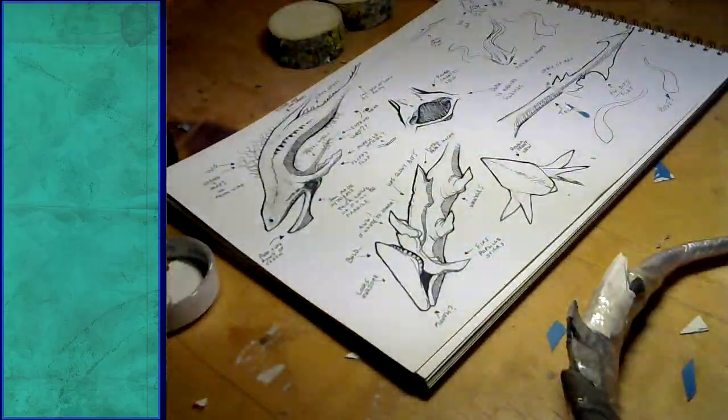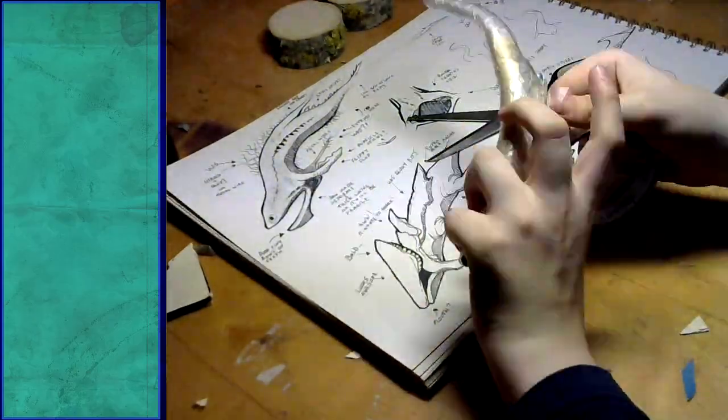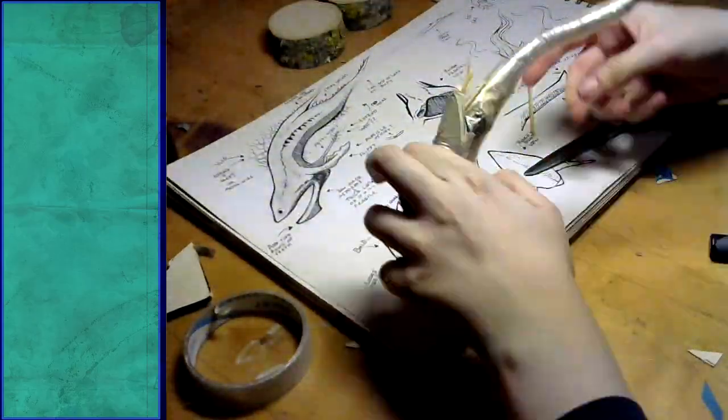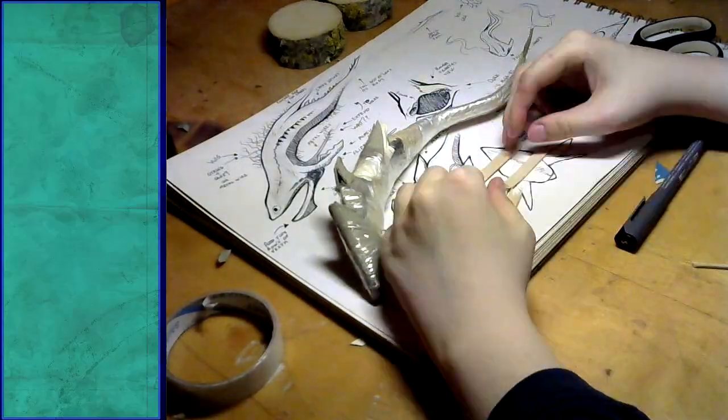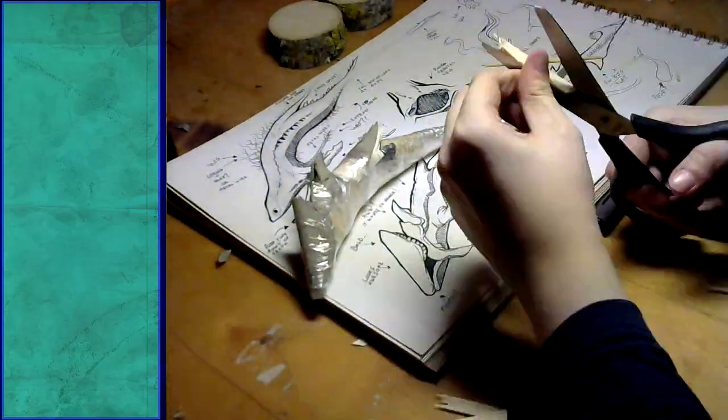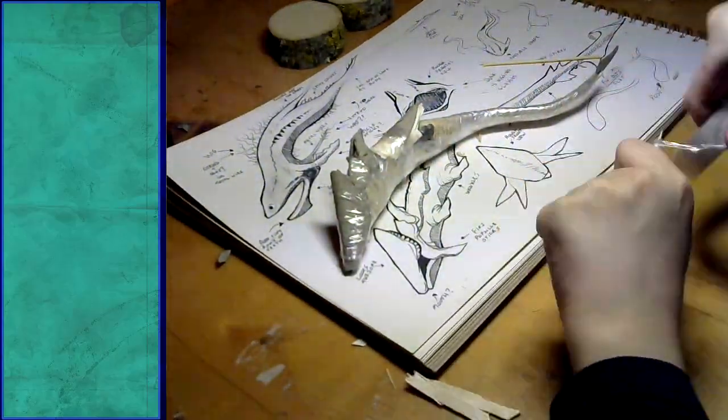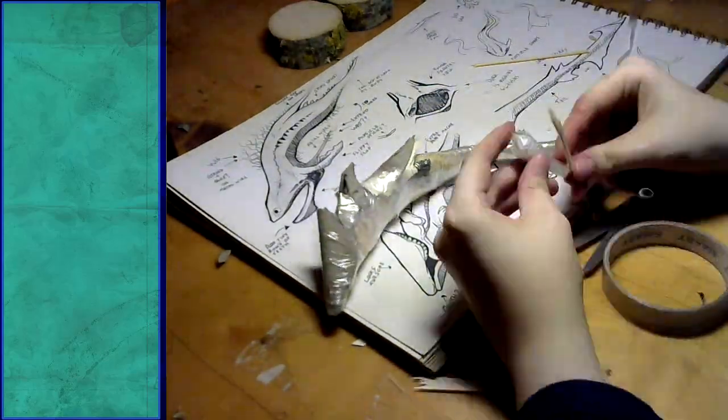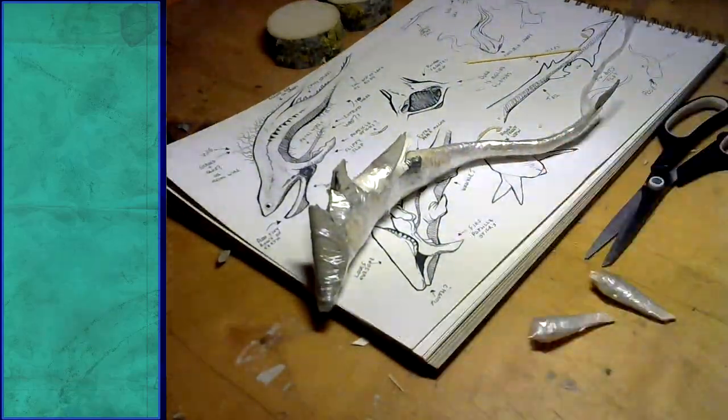As you can see I constantly reference my drawings on how the scales should look and how far they should be spread. It's nice to have something to compare your work to on the fly. Just like the other fish, I made little fins out of popsicle sticks and tape, this time six of them.